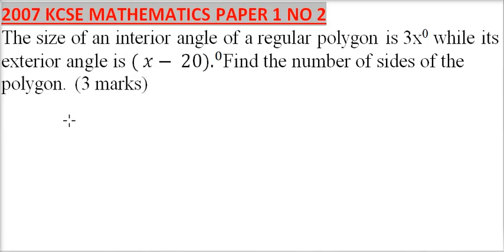2007 KCSE Mathematics Paper 1 Number 2. We are told the size of an interior angle of a regular polygon is 3x while its exterior angle is x minus 20. Find the number of sides of the polygon.